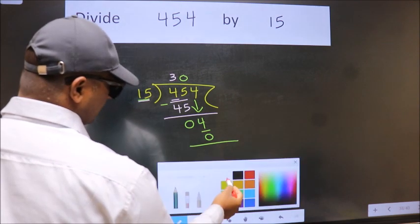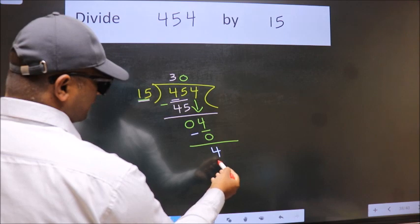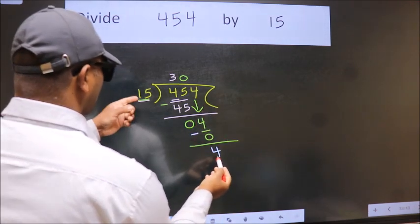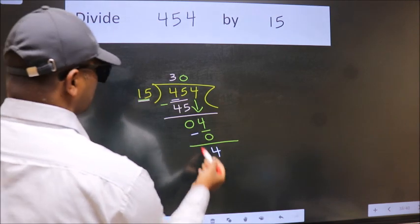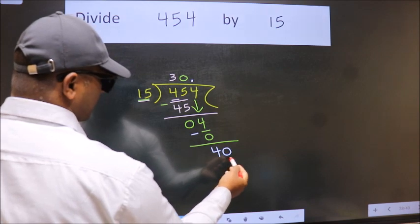Now we subtract. We get 4. Over here we did not bring any number down, and 4 is smaller than 15. So now we can put a dot and take 0. So 40.